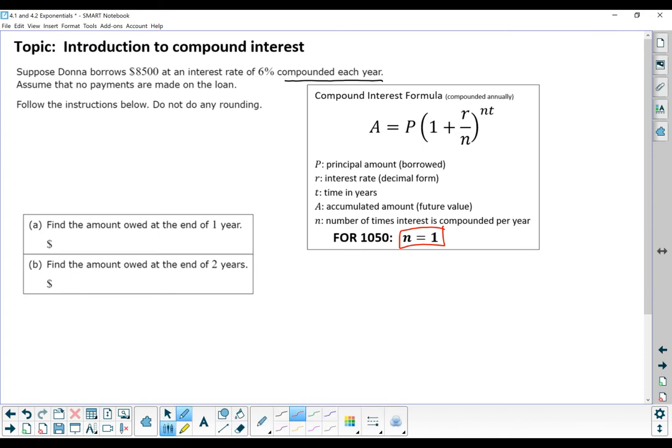In this topic, intro to compound interest, it will give you some information. It tells us that Donna is borrowing $8,500, that's our principal amount. Her interest rate is 6%, we want to use the decimal form of that, 0.06. Compounded each year tells us that N is 1. Assuming no payments are made, we want to find the amount owed at the end of year 1, so T is equal to 1. And it also wants us to find the amount after 2 years, so T is equal to 2 for the second one.